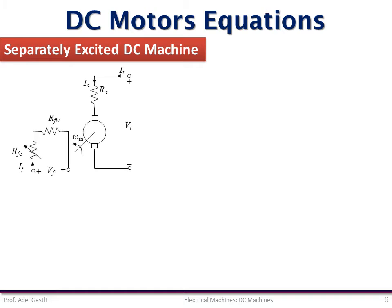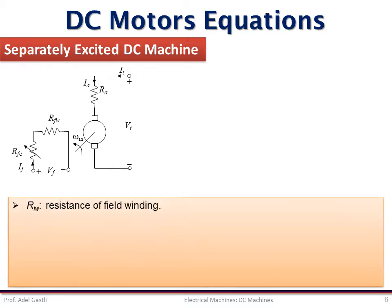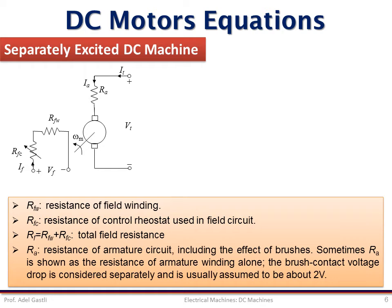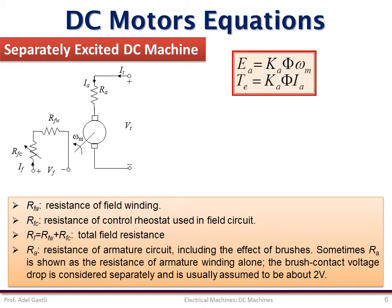A separately excited DC machine can be represented by this equivalent circuit, where RFW is the resistance of the field winding, RFC is the resistance of control rheostat used in the field circuit, and RF is the total field resistance which is the sum of RFW plus RFC. RA is the resistance of the armature circuit including the effect of brushes. Sometimes RA is shown as the resistance of armature winding alone. The brush contact voltage drop is considered separately and is usually assumed to be about 2 volts. Recall that in part 3 we demonstrated the expression of the back EMF and developed torque as a function of flux, speed, and armature current. These equations apply to all types of DC machines and do not depend on any classification.